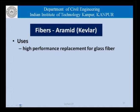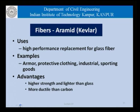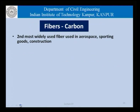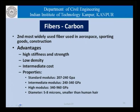As far as aramid is concerned, it is a high performance replacement for glass fibers, with examples in armor, protective clothing, industrial and sporting goods. It has the advantages of high strength, being lighter than glass, and being more ductile than carbon. Carbon fiber is the second most widely used fiber, used extensively in aerospace, sporting goods and the construction industry, with advantages of high stiffness and strength, low density, and intermediate cost. It has standard modulus of about 207 to 240 GPa, intermediate modulus 240 to 340 GPa, and high modulus 340 to 960 GPa.